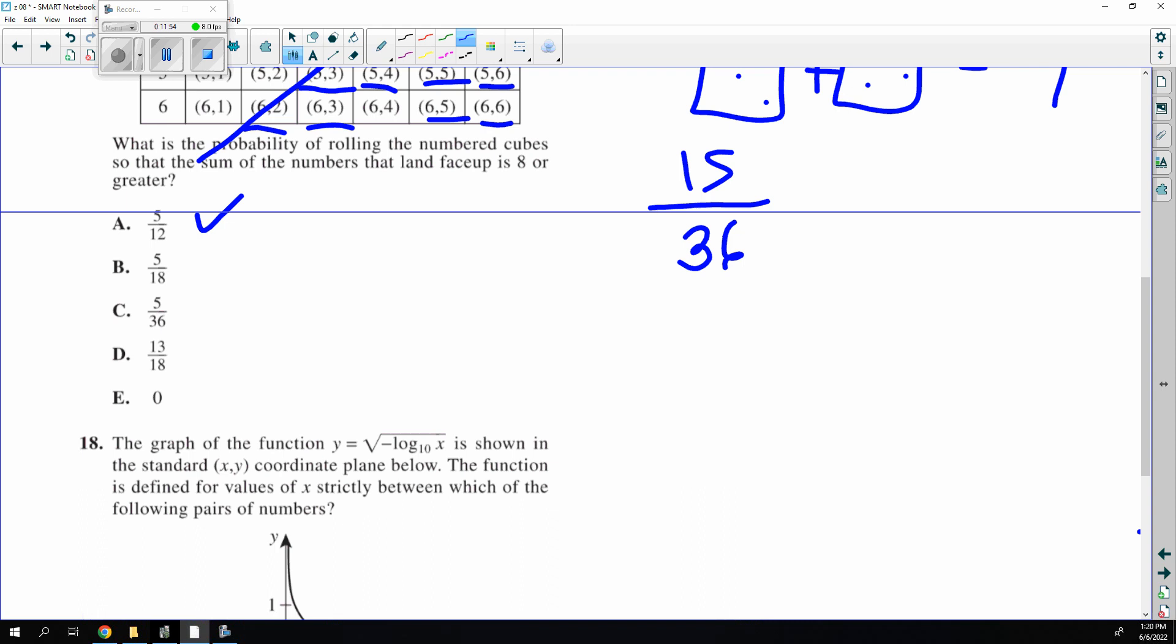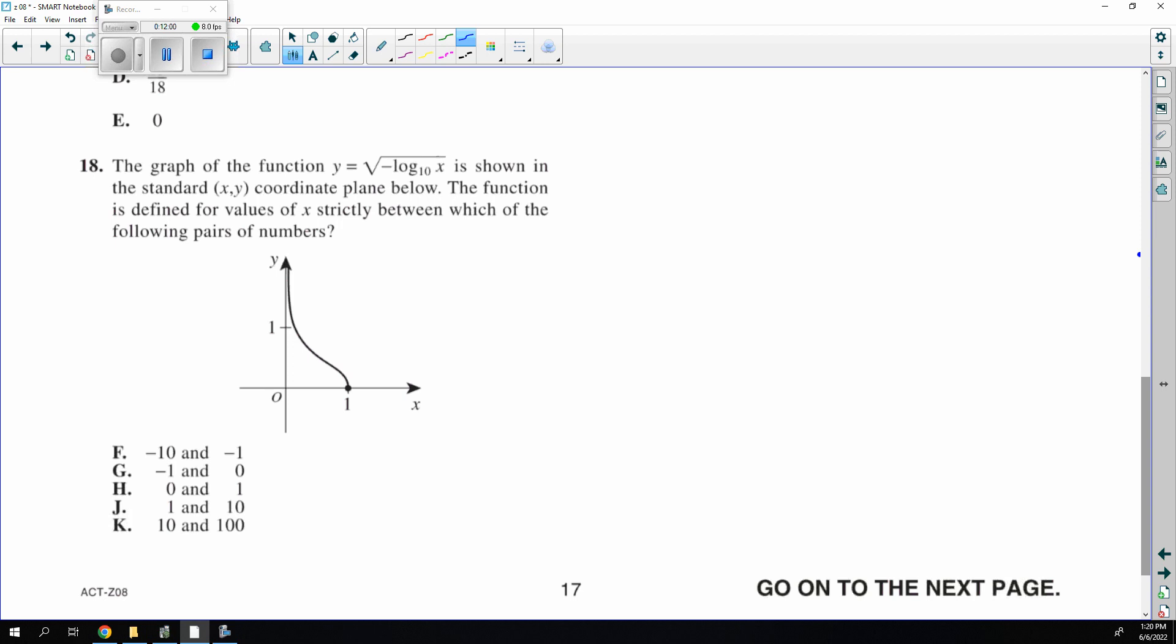This is saying when is this defined between which pair of numbers, and you could graph it on your calculator, but it's between 0 and 1. So you look at the x and say it's between 0 and 1 that it would be defined.